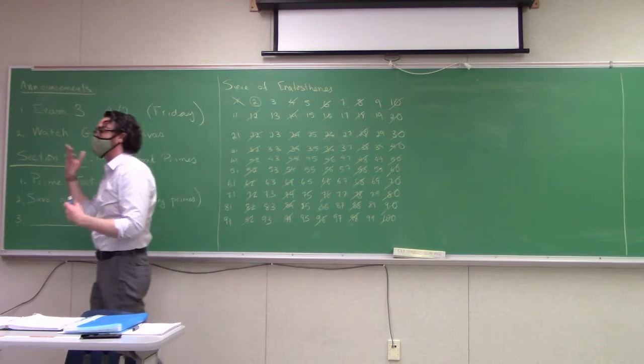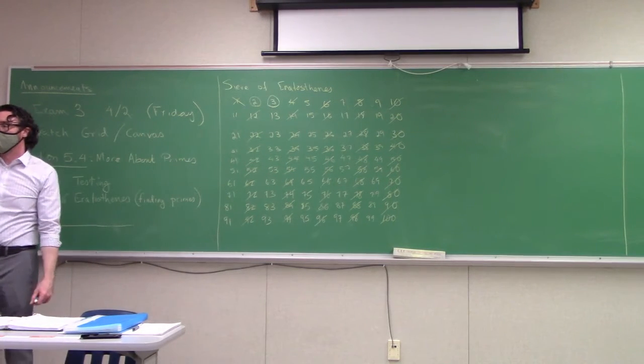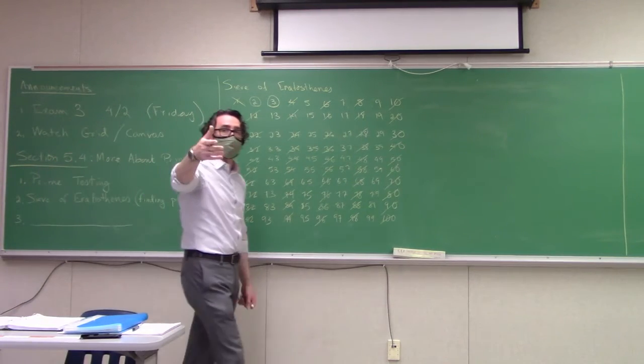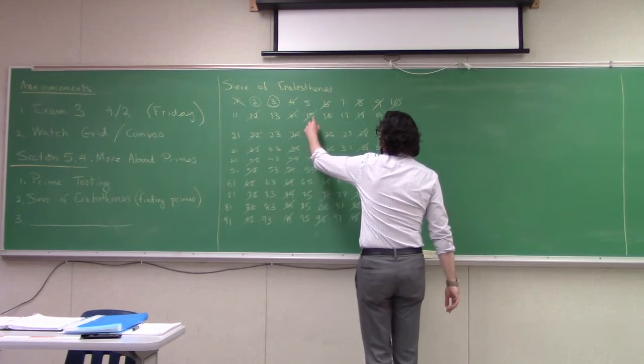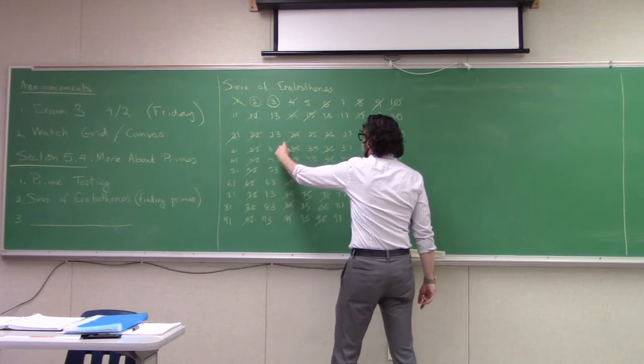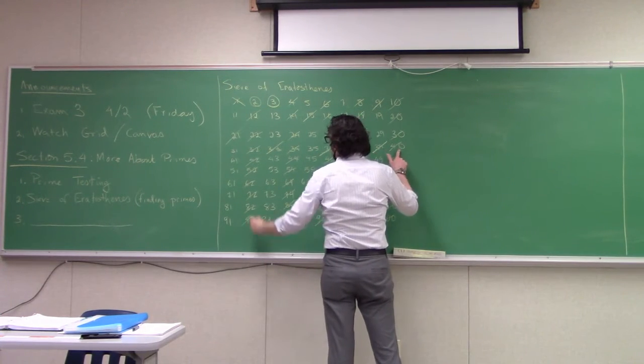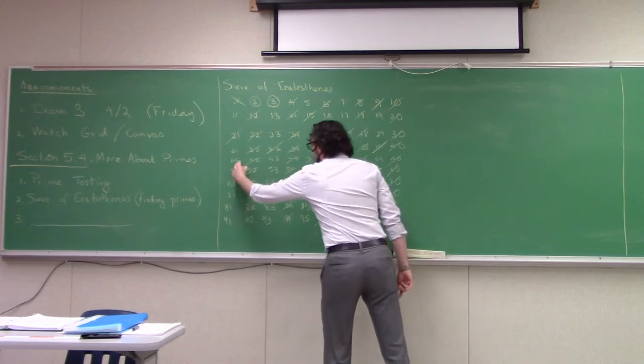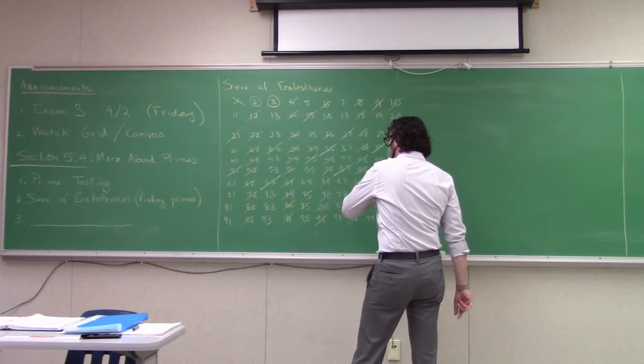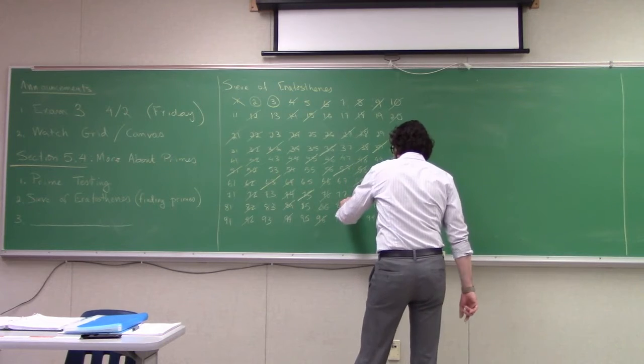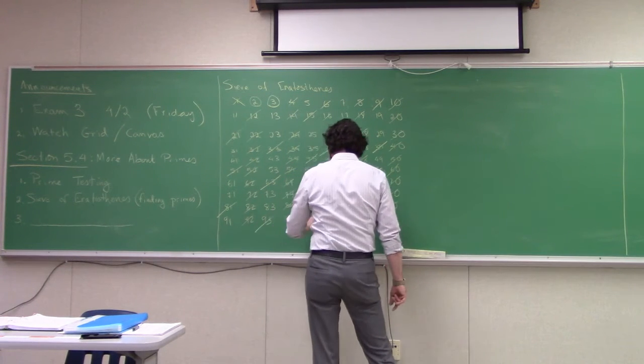Now, we circle the next number that isn't crossed off. That's going to be the next prime. Okay, so 3 is the next prime. Now, cross off all multiples of 3. Now, some of them you've already crossed off. 6 is already done. Okay, but 9 wasn't. Okay, 12 is done. 15, 18, 21 goes. 24 is already done. 27, 30, 33, 36, 39, 42, 45, 48, 51 is divisible by 3, so is 54, 57, 60, 63, 66, 69, 72, 75, 78, 81 is a multiple of 3, so is 84, 87 is gone, 90 is already gone, 93, 96, and 99.